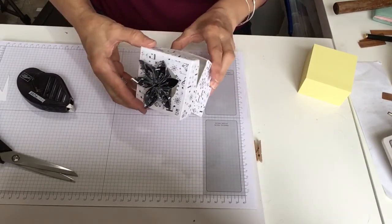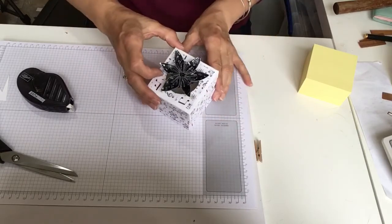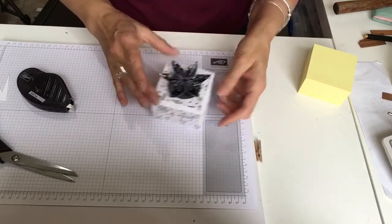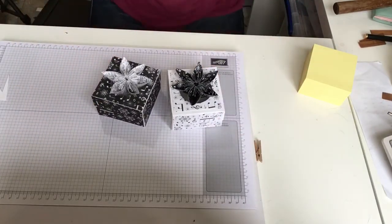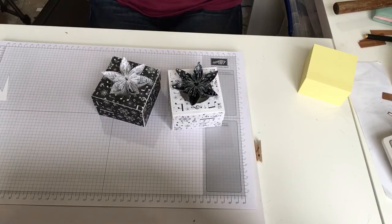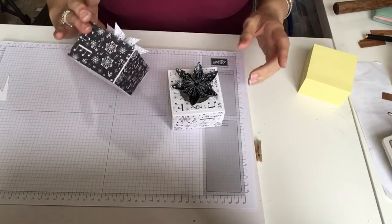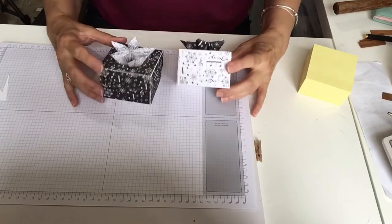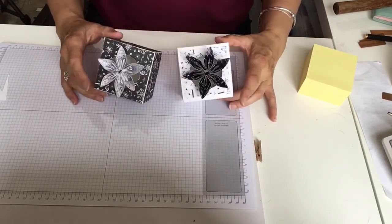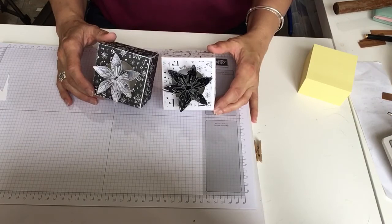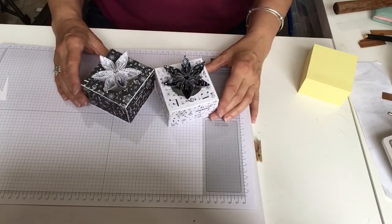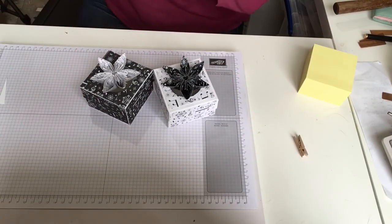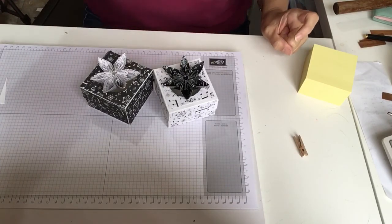And then we have the lid which should fit because we did the little bit of card. And there are your two boxes. Let me know which one you like best. I quite like the black one. The black with the white flower would be good. It would be really good to know which one you prefer. Okay, well thank you for watching. I hope you liked the visit from the cat who's now fast asleep in the corner, bless her. And I hope to see you soon. Bye.